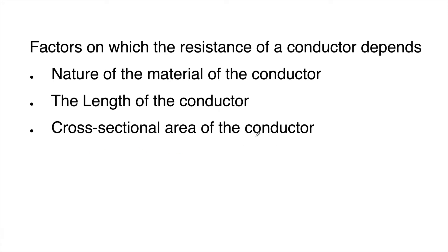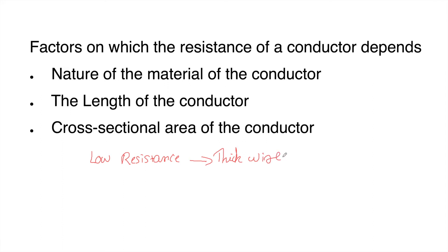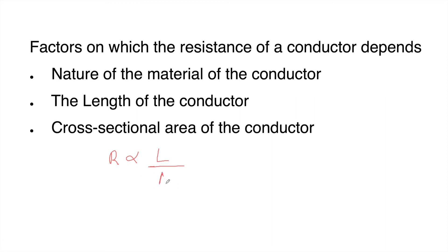Regarding cross-sectional area: a thicker wire allows electrons to flow easily, just as walking through a broad street is easier than a narrow one. A thick wire offers very low resistance. So resistance is inversely proportional to the cross-sectional area. Mathematically: R is directly proportional to L and inversely proportional to A.